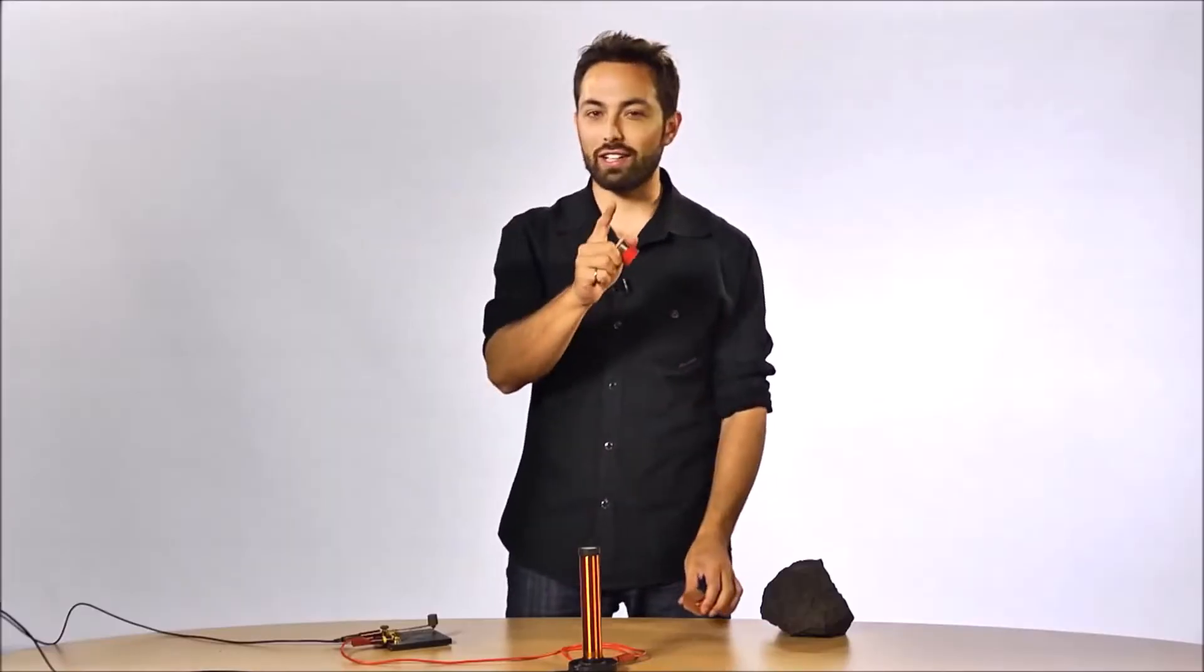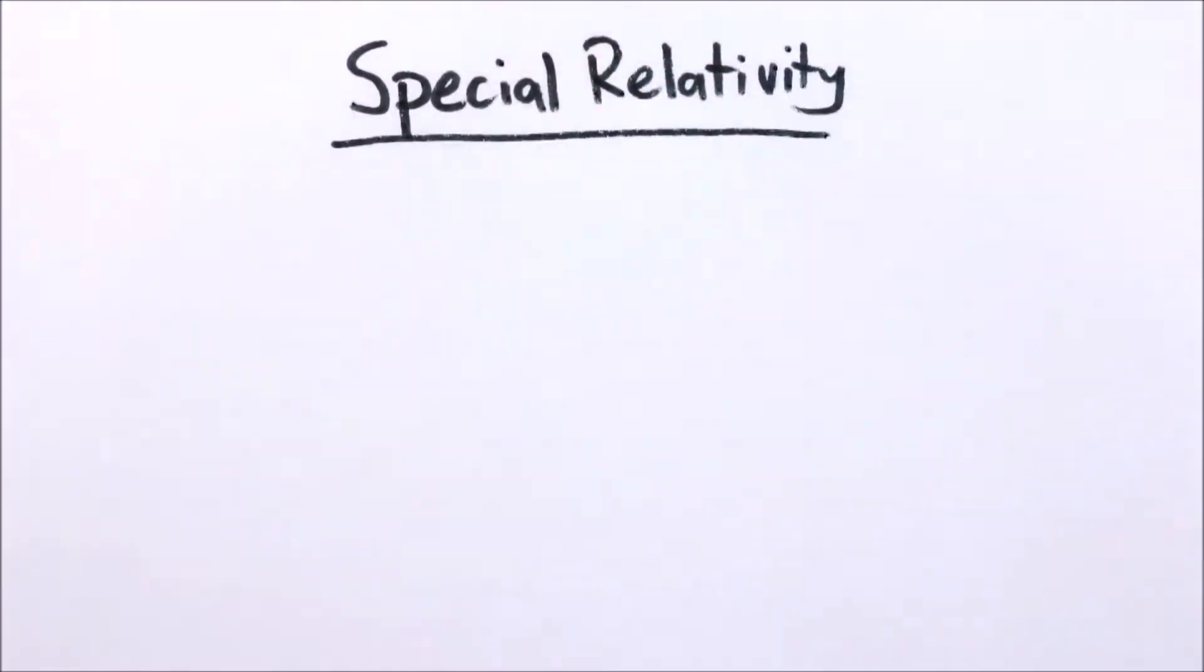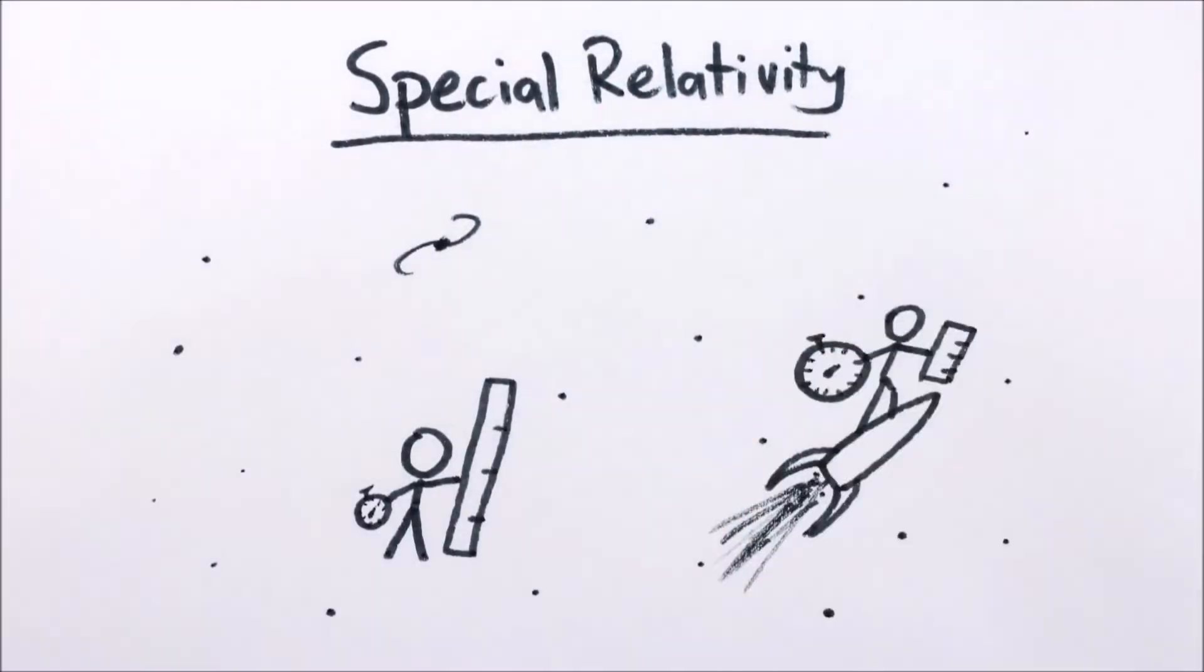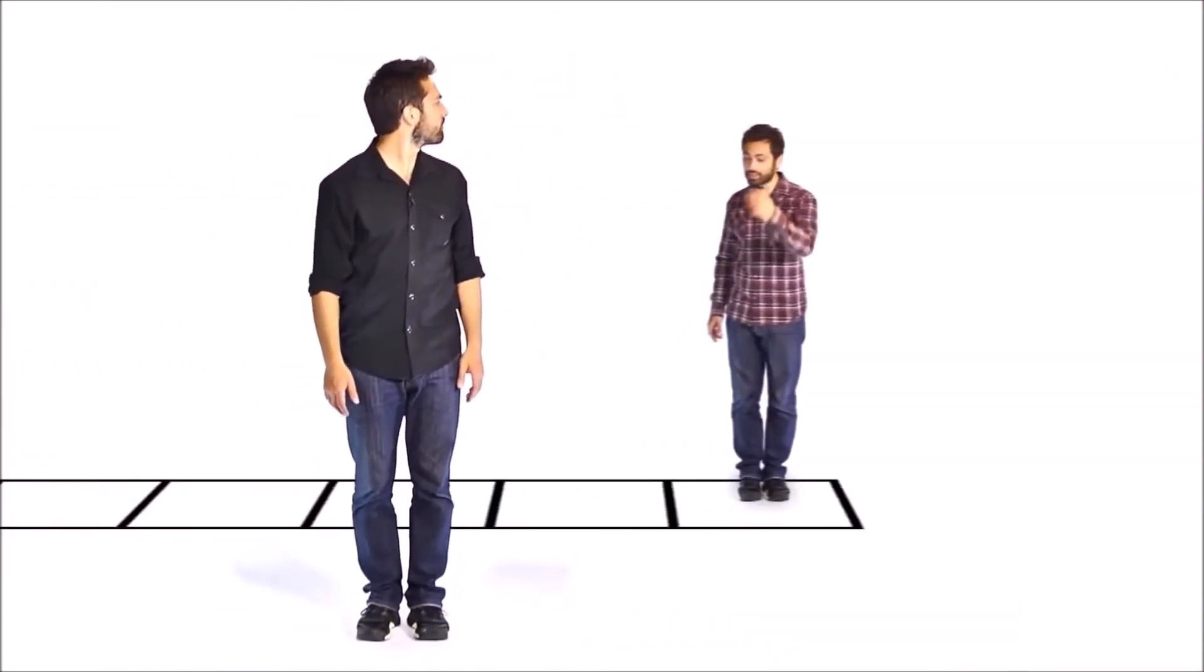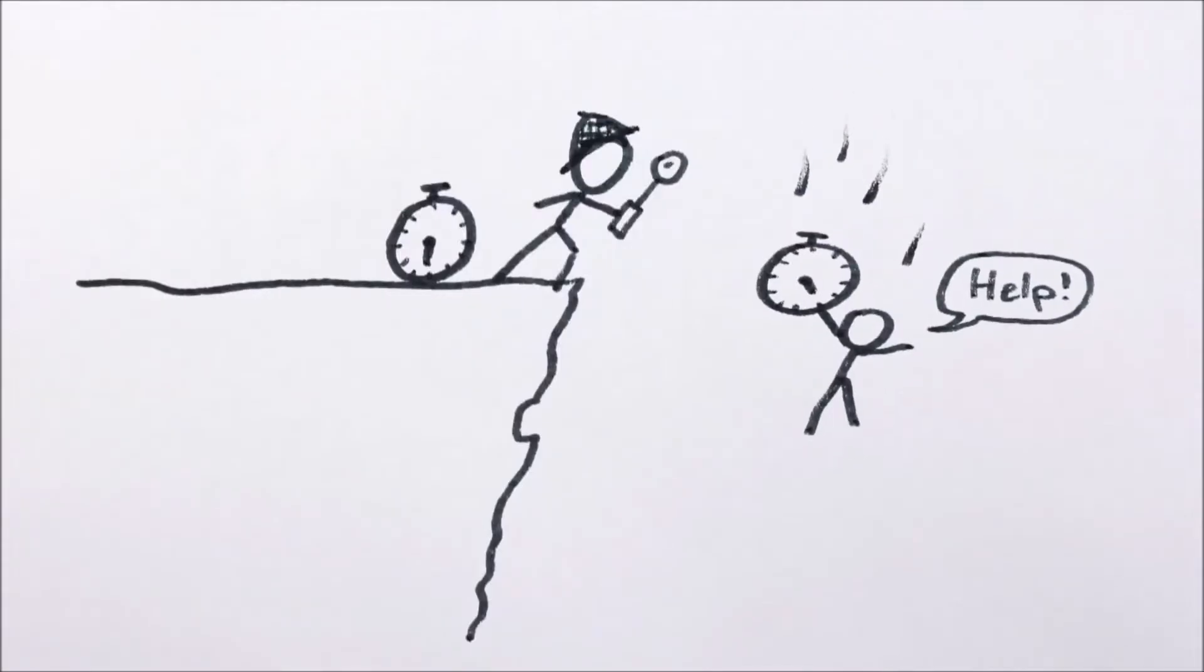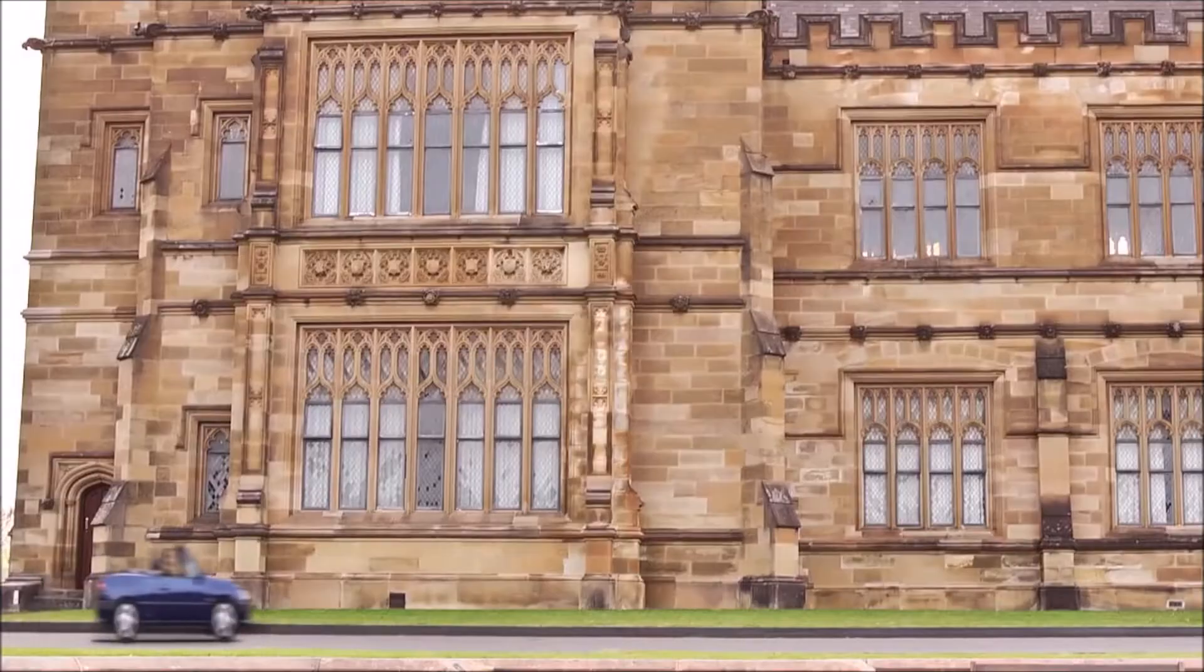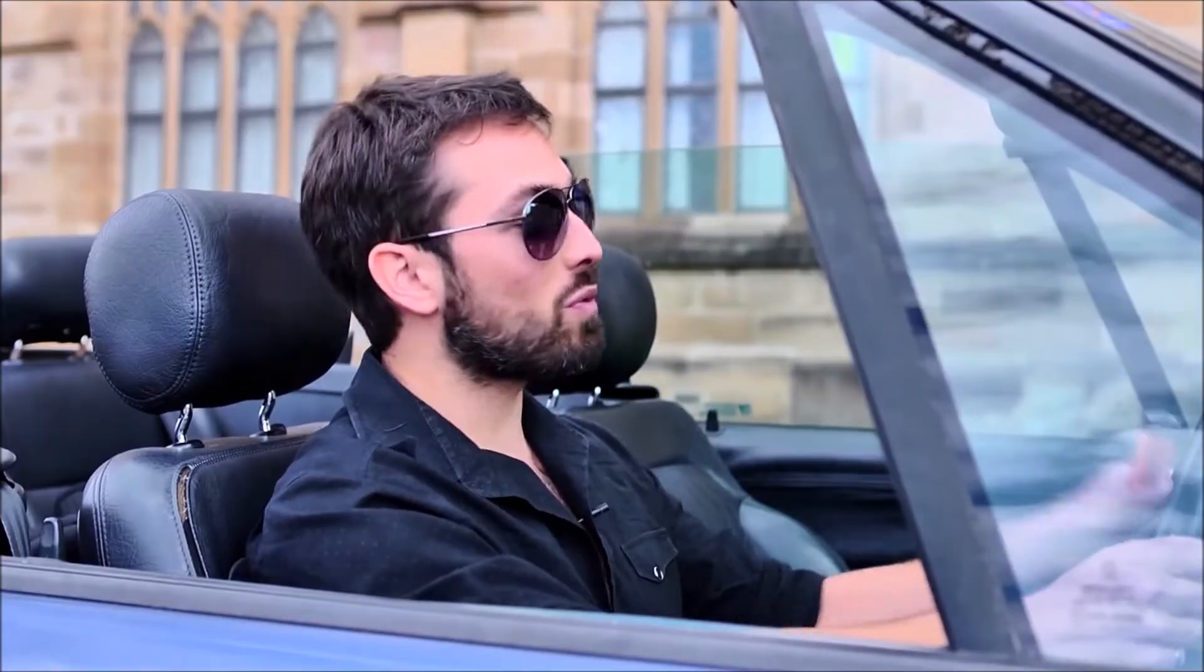In his video, Veritasium introduces the Lorentz contraction, which tells us how moving objects contract in the direction of motion. He then goes on to explain how this contraction makes electromagnets work. I will play the relevant parts of the video and then come back with my comments.